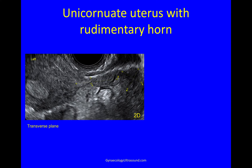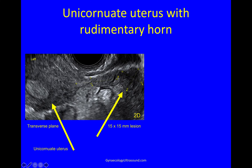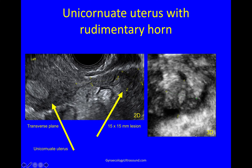When you see a unicornuate uterus you need to go looking for a rudimentary horn. In this example I could see a unicornuate uterus with a circular endometrial cavity, and on 3D I confirmed it to be unicornuate. I then saw the ovary, and off to one side there was a 15 mm lesion. When I applied 3D I could clearly see endometrial cavity within it — this was indeed a rudimentary horn, which was much less obvious on 2D.